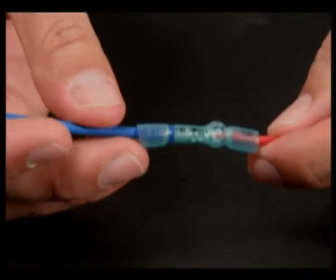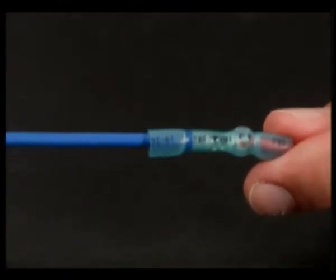Repeat the prior steps for the other side of the connector, ensuring the correct crimp die is used.